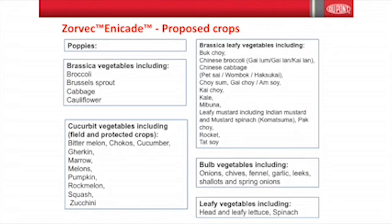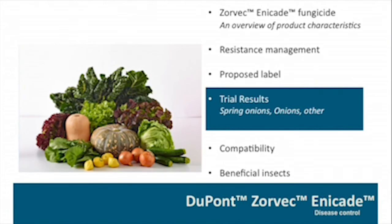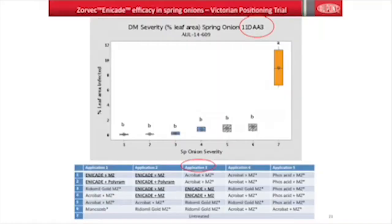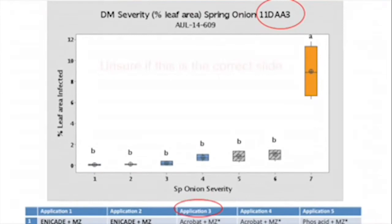Poppies are included for Tasmania, along with bulb vegetables and leafy vegetables. We're happy the label has a reasonable breadth of crops. In terms of compatibility, the product is an oil dispersible formulation (100 OD). It's been tested in different crops with different products, with no adverse crop effects and no influence on product performance.